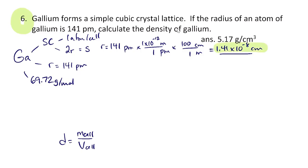Once you've done a few of these questions you quickly realize that hundreds of picometers will be 10⁻⁸ centimeters, but still show your work. With the radius, we can calculate the side length of the cube: s = 2r, so that's 2 × 1.41×10⁻⁸ centimeters. Even if you're not sure how to get the final answer, doing things that seem reasonable leads you forward.